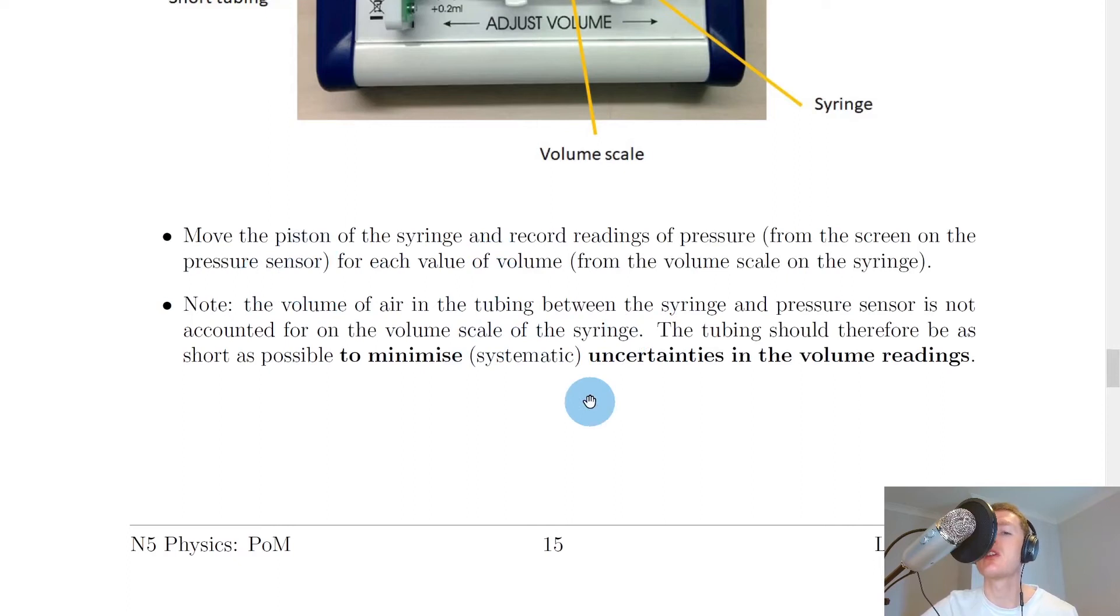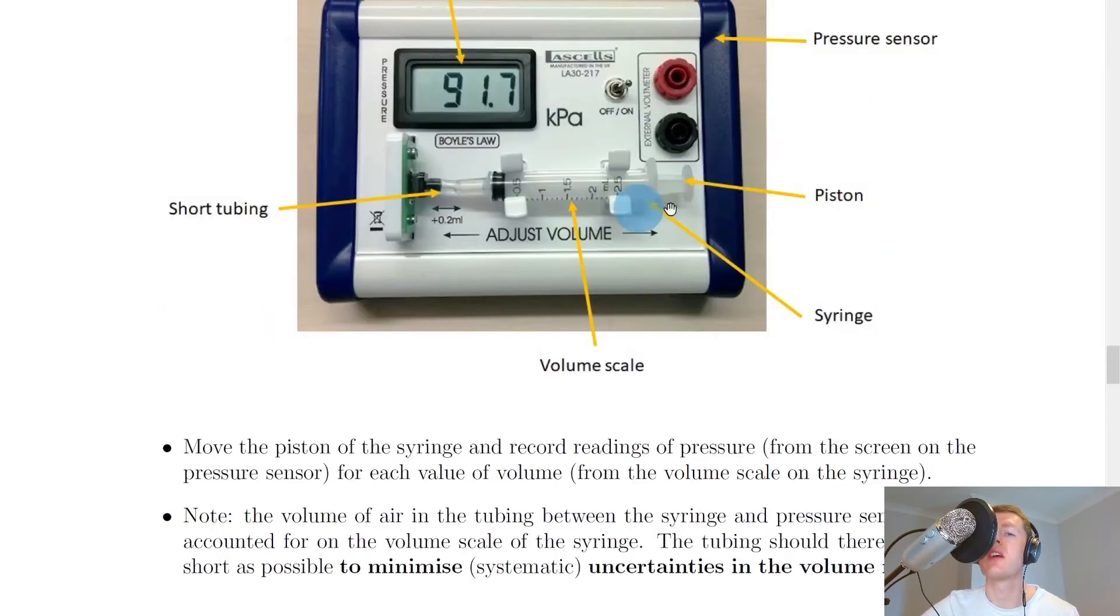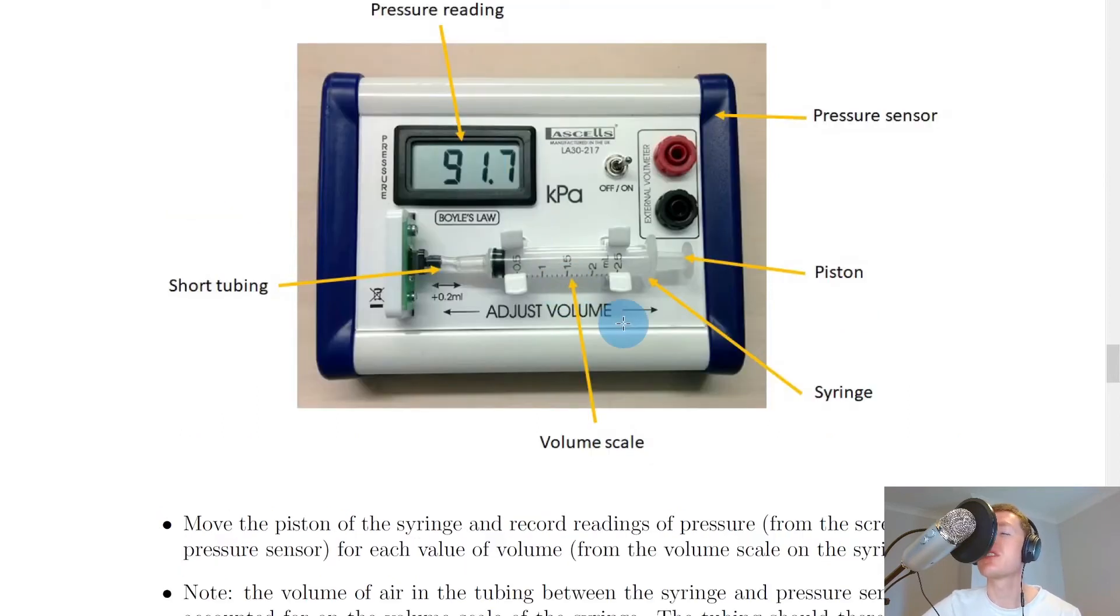Here are the important steps you need to describe in the exam. You would move the piston of the syringe and record readings of pressure from the screen for each value of volume from the volume scale. If you started with the piston at 0.5 millilitres, note down the pressure reading in kilopascals. Then move the piston in even steps. Go to 1 millilitre and write down the pressure, then 1.5 millilitres and so on. In simpler terms, we're changing the volume of air inside the syringe and recording the pressure reading on the screen.